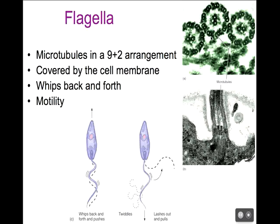The eukaryotic flagella is completely covered by the cell membrane. In a prokaryote, the flagella was truly stuck on the surface, outside of the cell. But in a eukaryote, the cell membrane surrounds the flagella, so it doesn't truly extend from the surface — it is part of the cell. In prokaryotes, there are no microtubules; what makes up the prokaryotic flagella is a protein called flagellin. That's another fundamental difference.